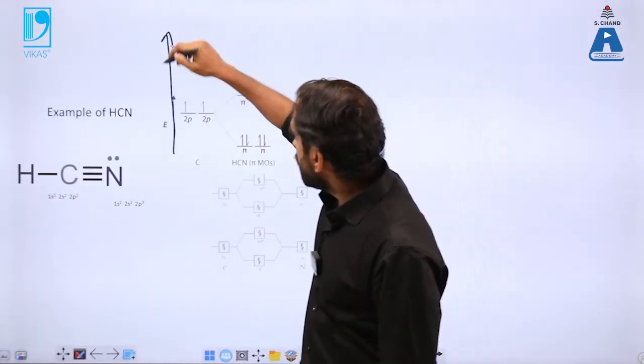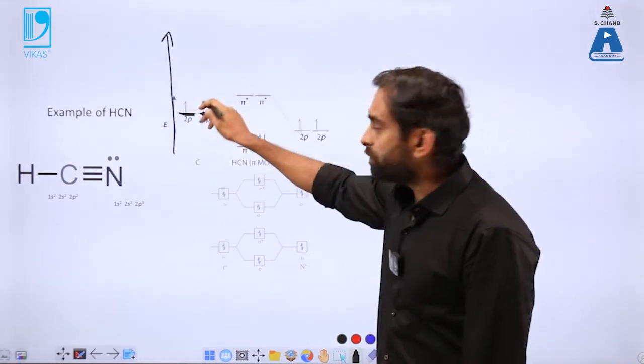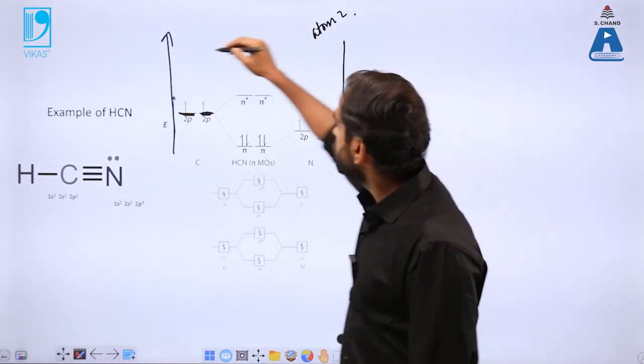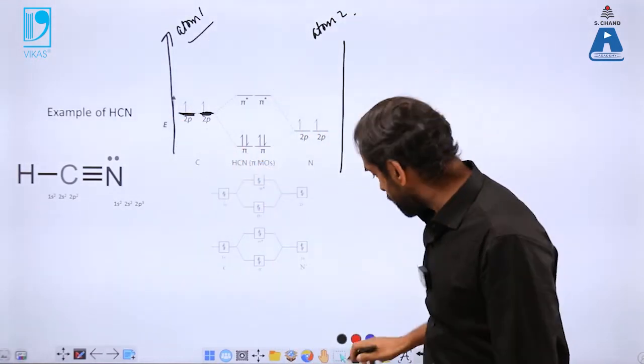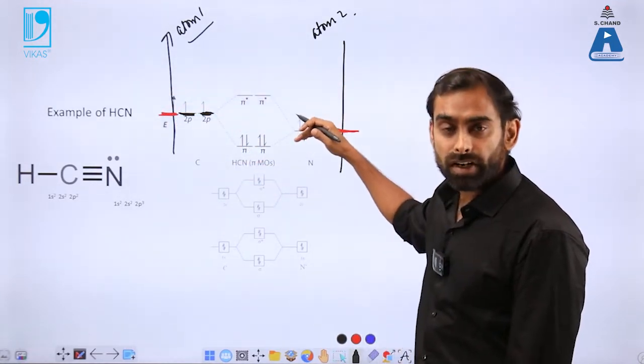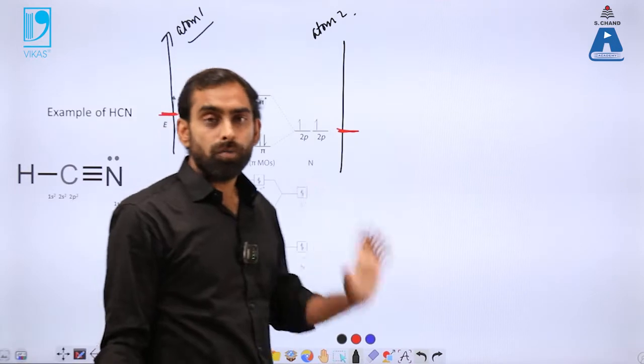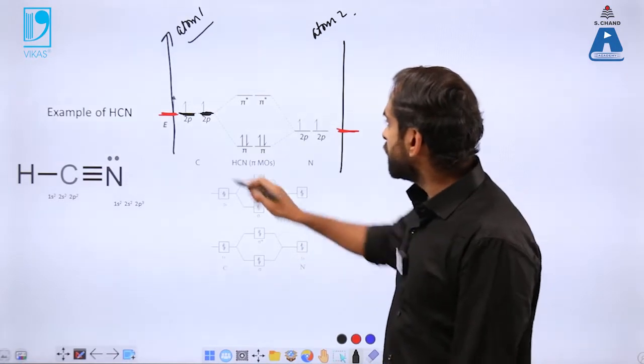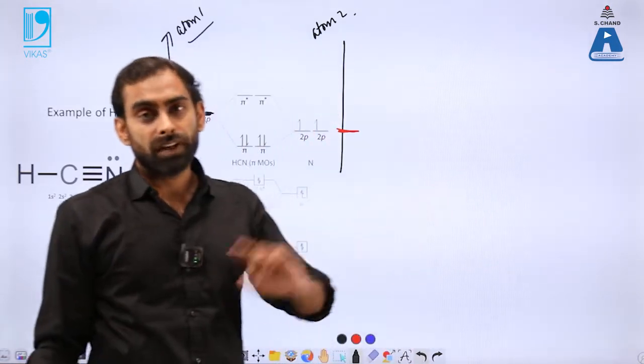If this axis is representing energy and this level is representing the energy level of atomic orbitals, on the other side where you have atom two, you don't have the same energy level. Can you just cross-check here? It is having an energy level at this point, but this atom is having an energy level at this point. So that is the minor difference between the homoatomic molecules and heteroatomic molecules. When you draw it for heteroatomic molecules, then you take care of the energy levels of the same type of shell in different atoms.